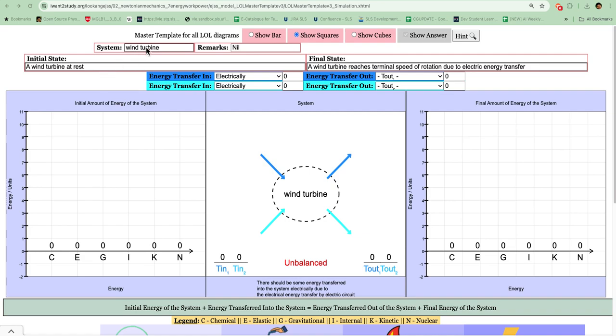This master template for energy stores and transfer simulation allows you to customize your own system's initial states and final state. Simply come to the system and change the string here, which will dynamically reflect in the display. For example, if you want to change it to wind turbines.